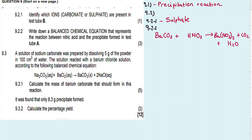Now let's balance the equation. Checking barium: one on the left, one on the right — balanced. Carbon: one on each side — balanced. Oxygen: on the left, 3 from BaCO₃ plus 3×2 from HNO₃ gives 6+3 = 9. On the right: from CO₂, NO₃⁻, and H₂O — counting gives 9 total. So oxygen is balanced.